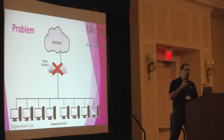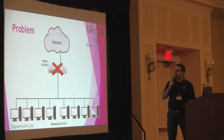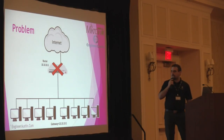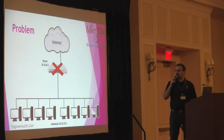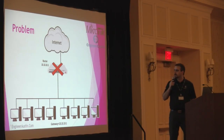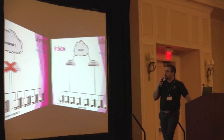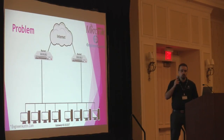Let's say the router fails or we need to do some maintenance on the router and it has to be restarted. What happens to those clients connected to the router? Obviously, none of them still has access to the internet, none of them can browse pages. That's why we need to have a redundant router — another device to operate instead of the main one — to get rid of this single point of failure.